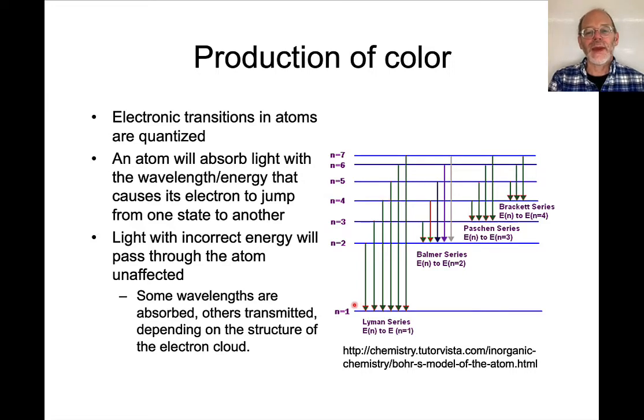Now, electromagnetic radiation can interact with electrons to cause them to jump from a lower state to a higher state. If that happens, that wavelength of light will be absorbed. It will not be transmitted.